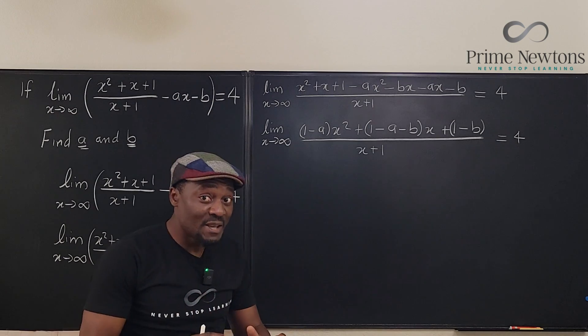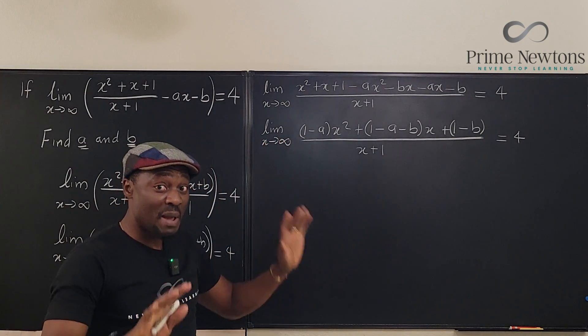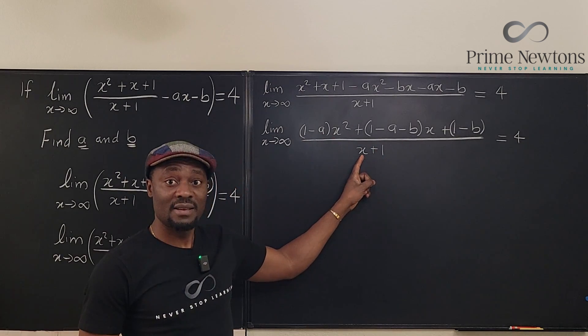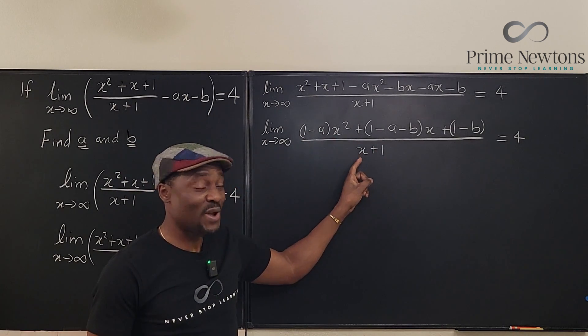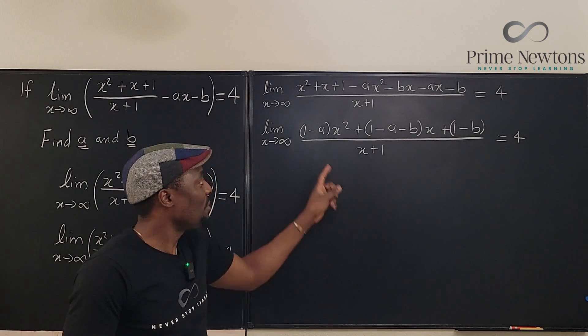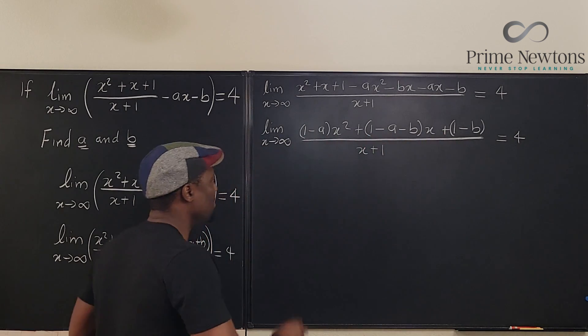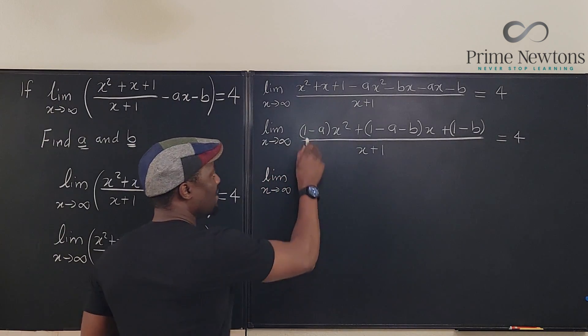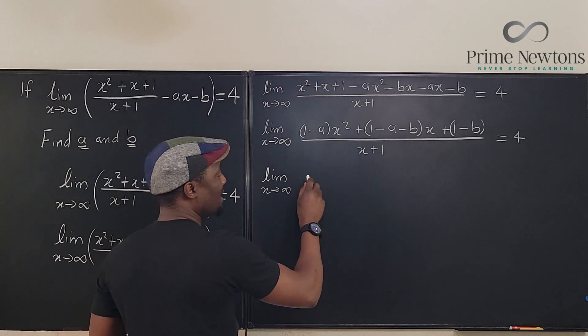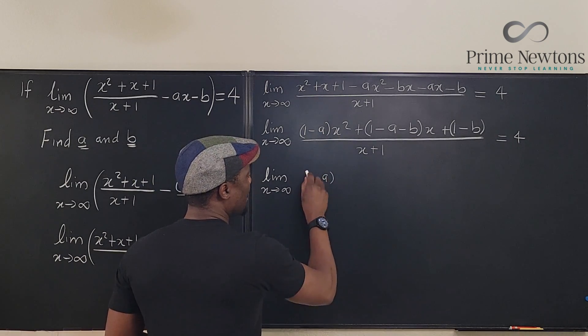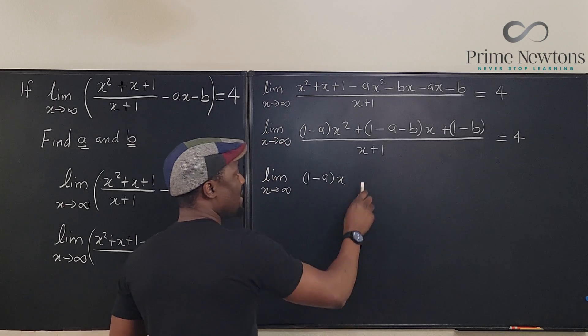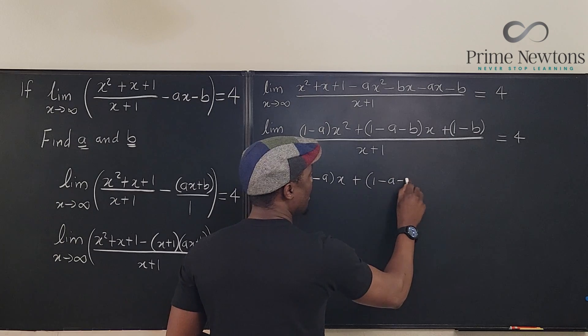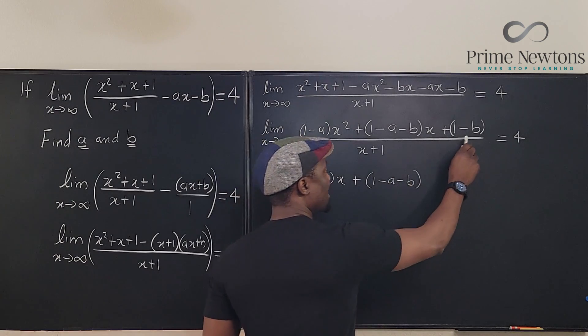Now when you're taking the limit and x is going to infinity, remember the strategy. Look at the denominator and divide every term by the highest power of x that you have, which here is just x. So the limit as x goes to infinity: if I divide this by x, I'm going to get (1 minus a) x. If I divide this by x, I get plus (1 minus a minus b).